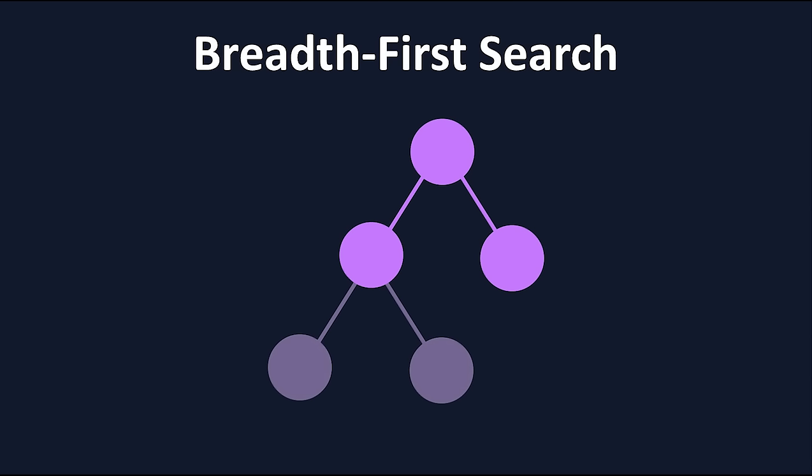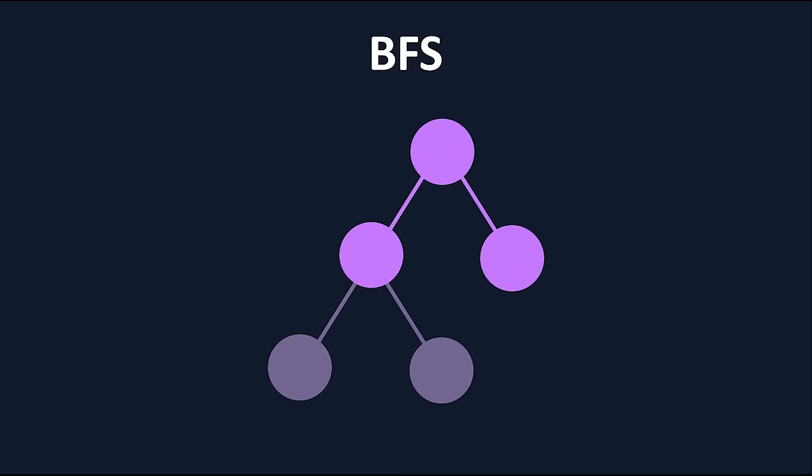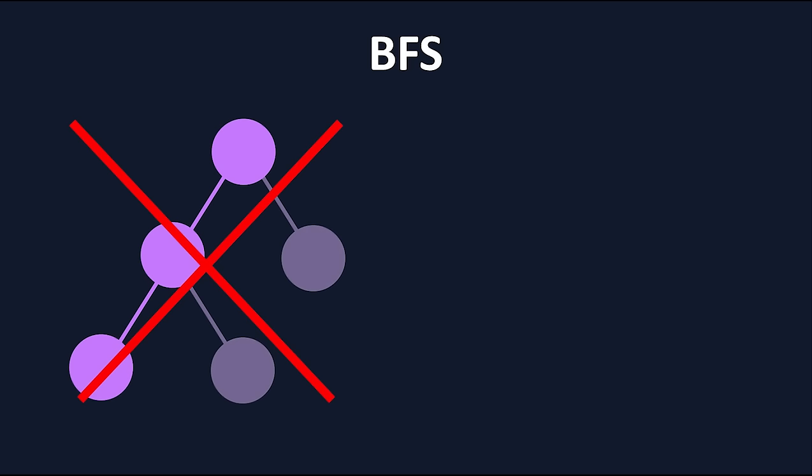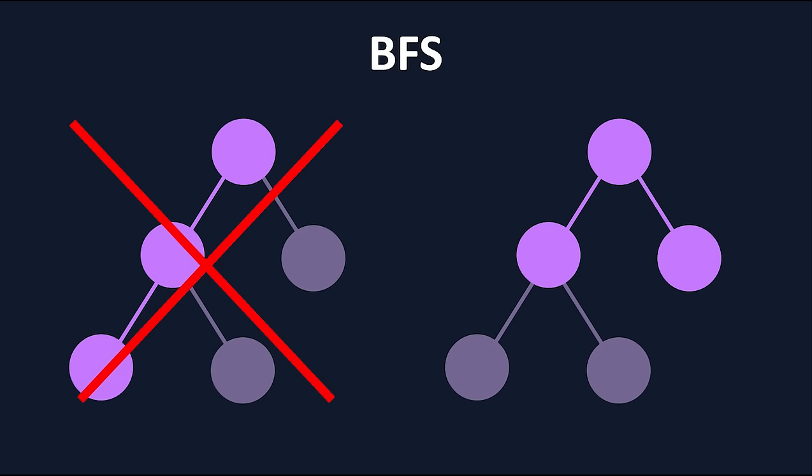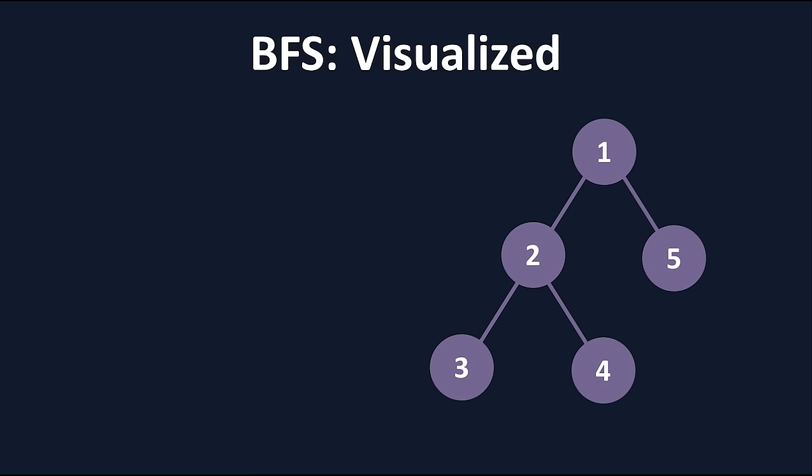Now that we've covered DFS, breadth first search, commonly referred to as BFS, will be a bit easier to understand. In BFS, instead of going all the way down each branch and backtracking up, we'll look at every node at one level before continuing further down. Let's look at a visual demonstration.